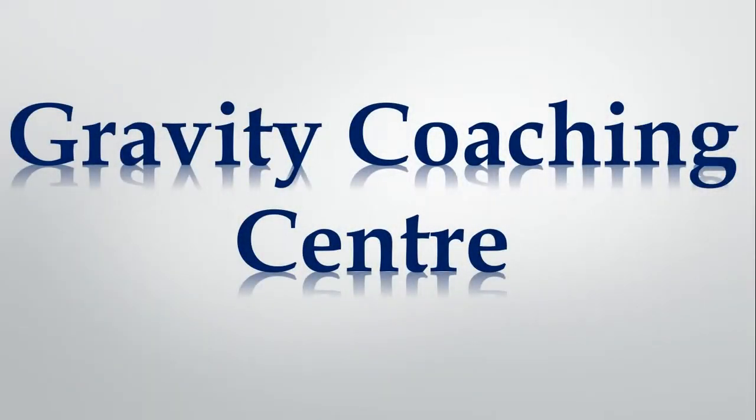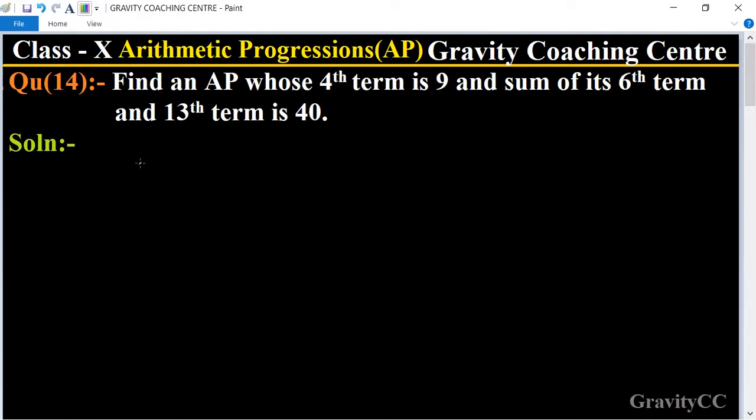Welcome to our channel Gravity Coaching Center. Class 10, Chapter Arithmetic Progressions, Question Number 14. Find an AP whose fourth term is 9 and sum of its sixth term and 13th term is 40. So in this question, given...